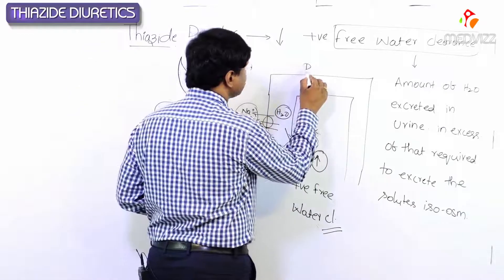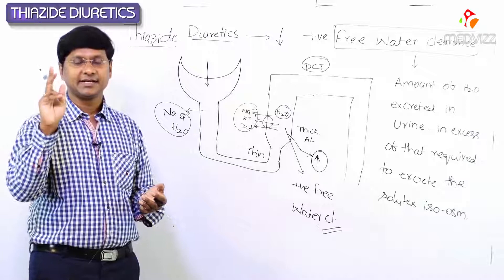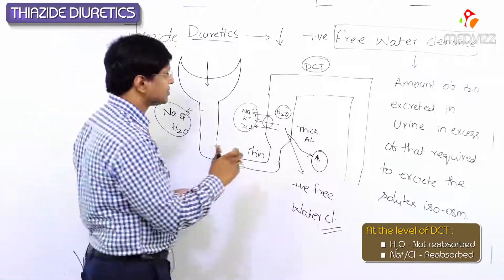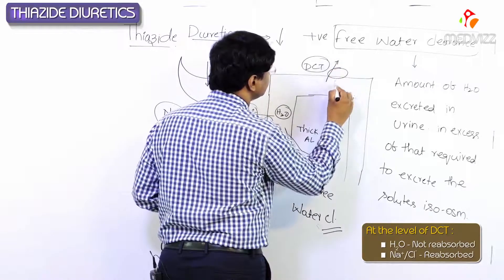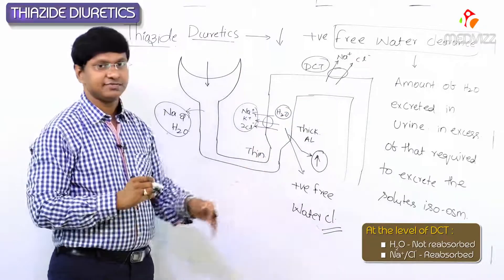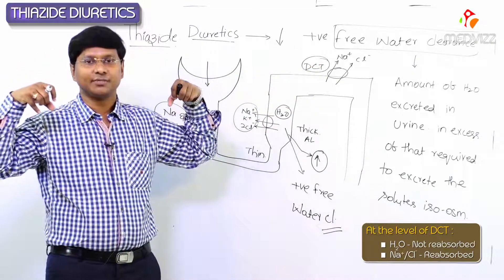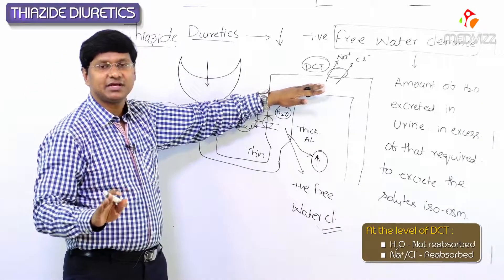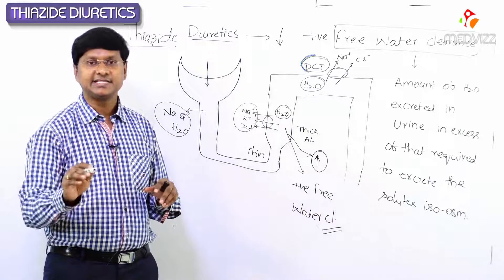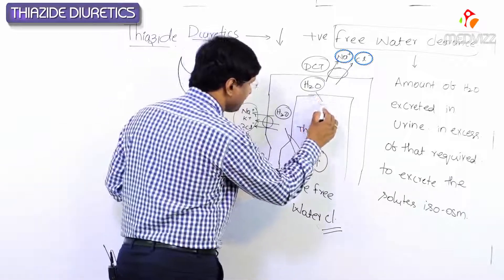At the level of the distal convoluted tubule, water is not being reabsorbed, but sodium and chloride are being reabsorbed, leaving the water behind. So at the DCT, only solutes are reabsorbed while water remains, and this contributes to positive free water clearance.